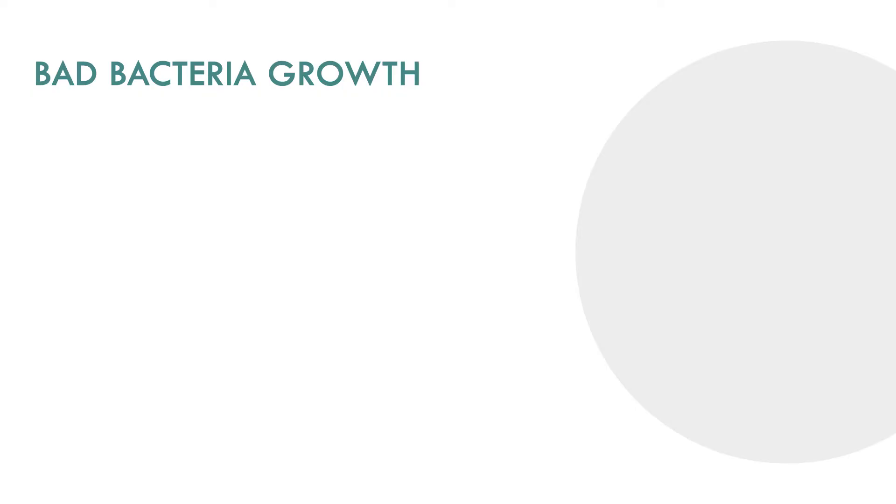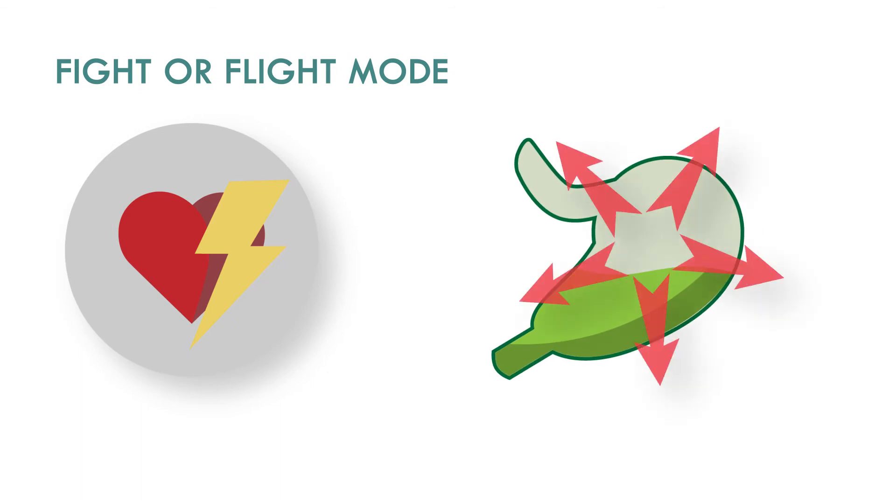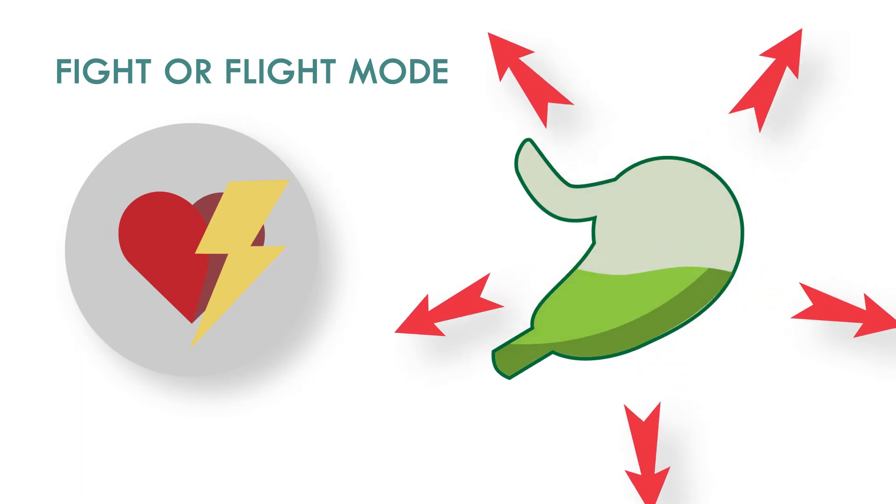The growth of bad bacteria can happen through overuse of antibiotics, poor dietary choices, and long-term stress that goes untreated. Stress, which is also called the fight-or-flight mode, shifts blood away from the circulation of the gut, effectively decreasing circulation to the gut flora like a lawn that goes without water and can do some harm to those good bacteria.